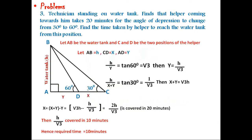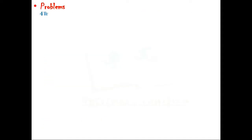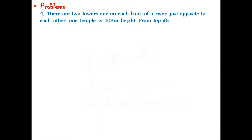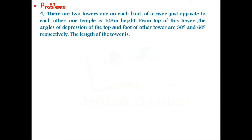Let us consider the fourth problem. There are two towers, one on each bank of a river, just opposite to each other. One tower is 108 meters high. From the top of this tower, the angles of depression of the top and foot of the other tower...